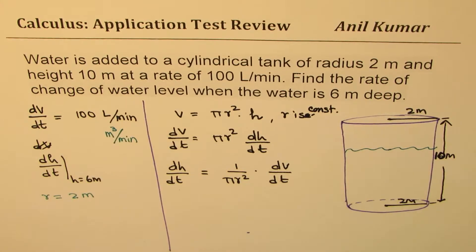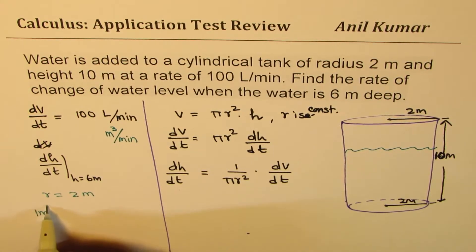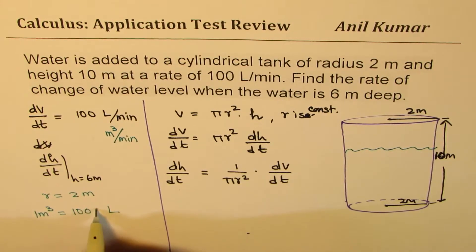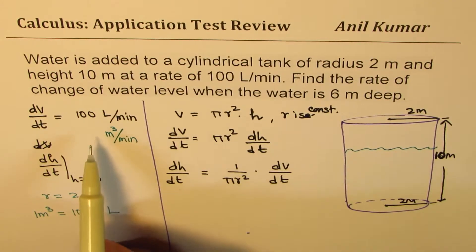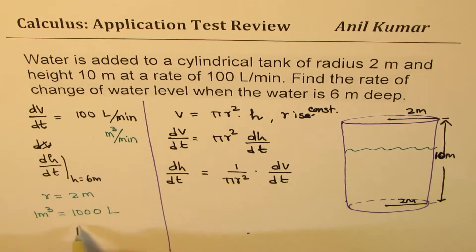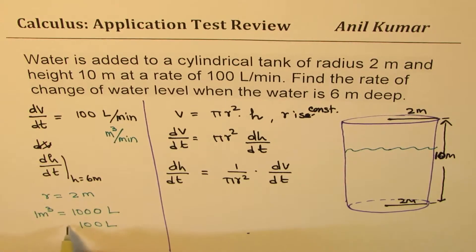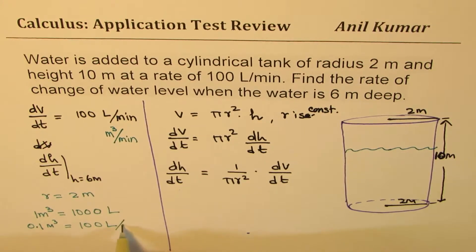So what is that conversion? We know that 1 meter cube equals 1000 liters. Therefore, when I say 100 liters, so 100 liters will really mean 0.1 meter cube. So it has 100 liters per minute. So that will be 0.1 meter cube per minute. So now we have what dV/dt is.